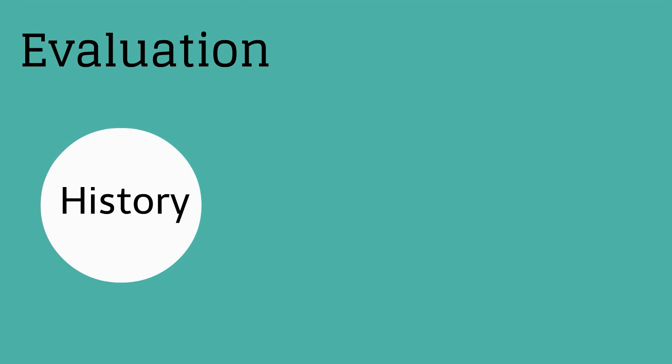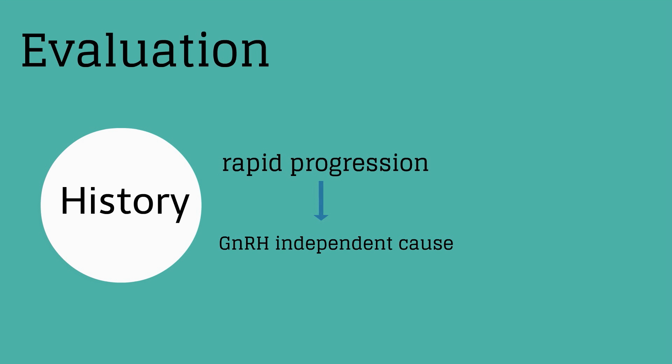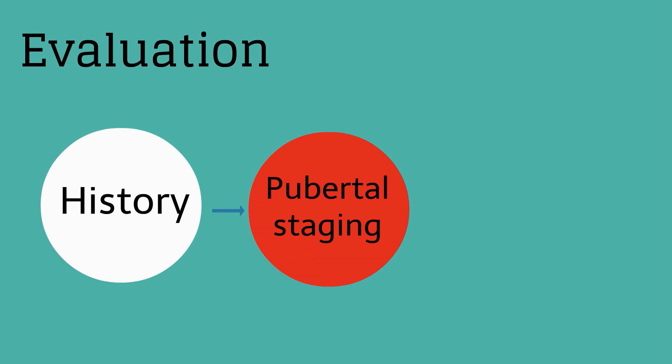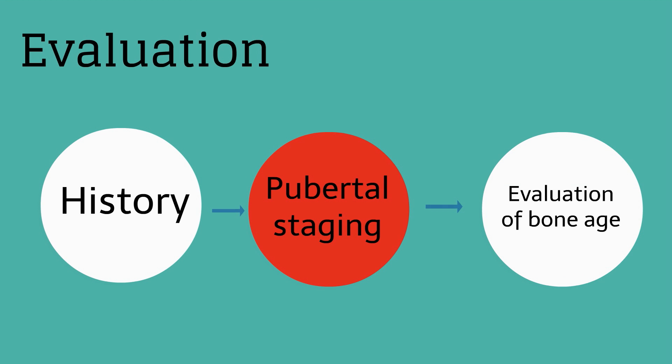The evaluation of precocious puberty should start with a careful history, asking specifically how quickly puberty is progressing. A rapid progression of pubertal symptoms suggests a GnRH-independent cause such as an ovarian tumor. The history can also help discern whether symptoms appear to be driven more by estrogen or androgen stimulation.